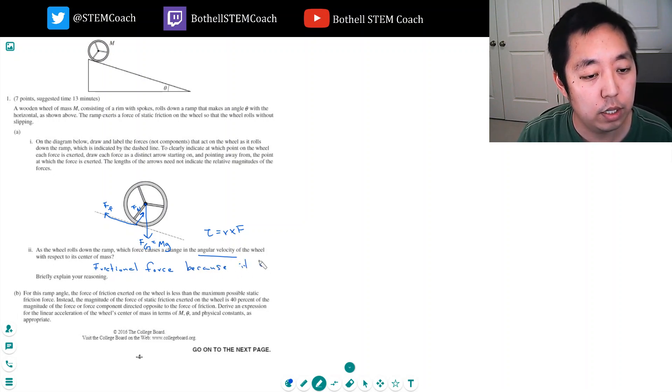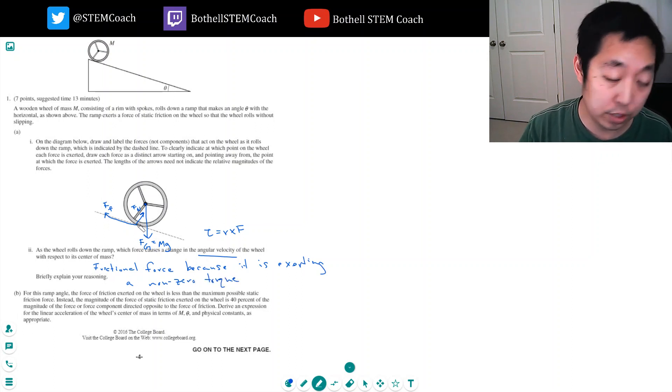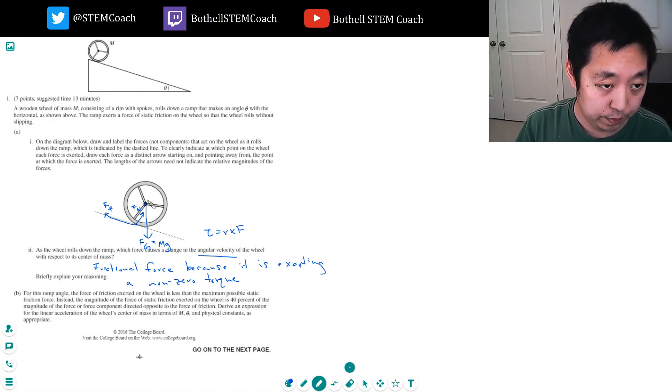It is exerting a non-zero torque. And I might explain in here, while the normal force doesn't exert a torque, because r is parallel to f, and gravity doesn't exert a torque because r is zero for r cross f.